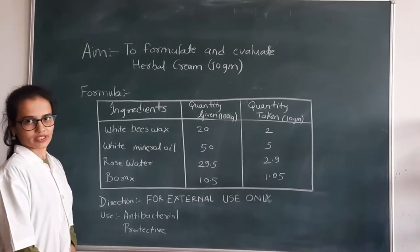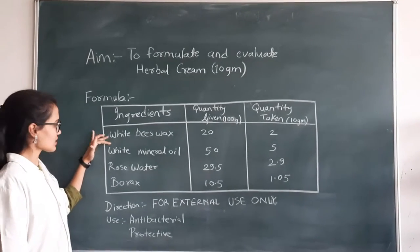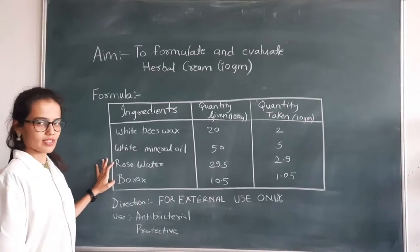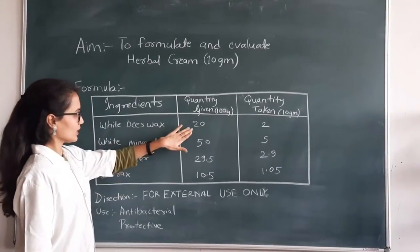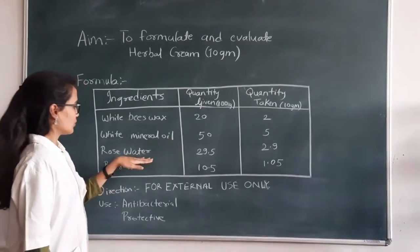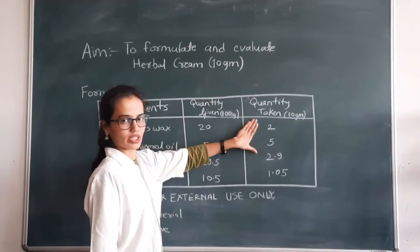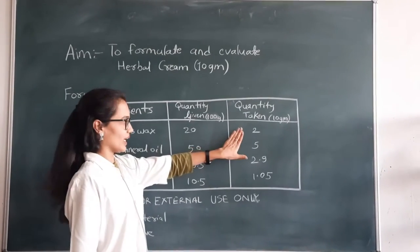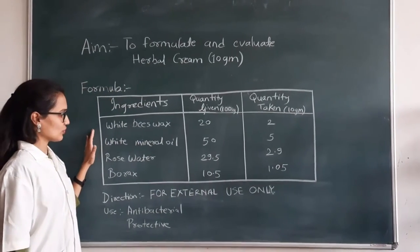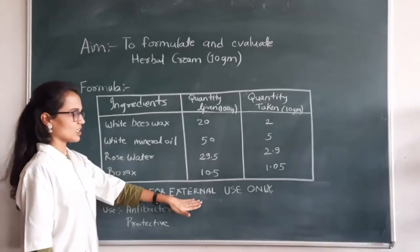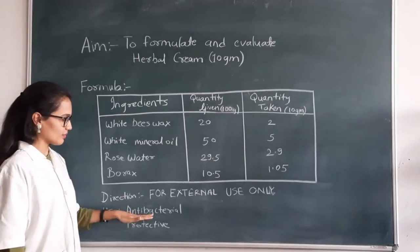To formulate and evaluate herbal cream, we are preparing 10 grams. Ingredients required are white beeswax, white mineral oil, rose water, and borax. The quantity given is for 100 grams: white beeswax 20 grams, white mineral oil 50 grams, rose water 29.5 grams, and borax 10.5 grams. By cross multiplication, the quantities for 10 grams have been calculated. The direction is for external use only, and the herbal cream is antibacterial and protective.